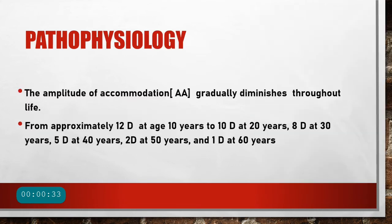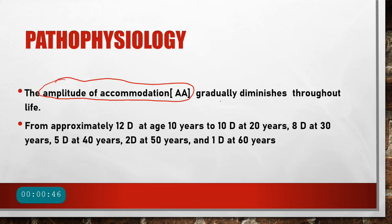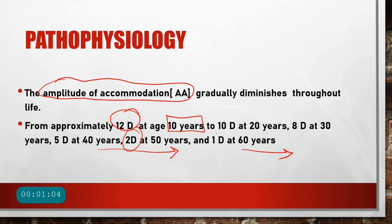The incidence is almost 100%, but what causes presbyopia? What is the pathophysiology? The main reason is the amplitude of accommodation, which gradually diminishes throughout life with age. It is present at maximum amount during childhood — at 10 years of age it is about 12 diopters — and as the age progresses into the fifth and sixth decades, it can decrease to about 2 diopters, then 1 diopter, and finally become zero diopters.